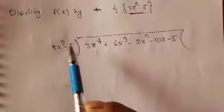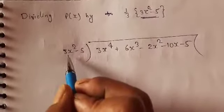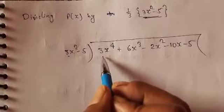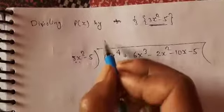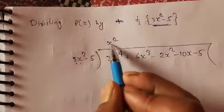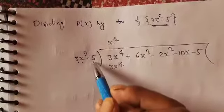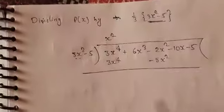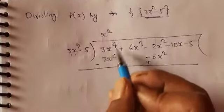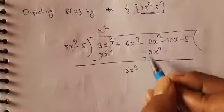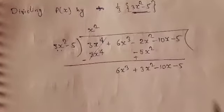Dividing, the terms are in descending order of powers. From the first term of the divisor we have to make the first term of the dividend. The coefficients of x⁴ are both 3, so we multiply the divisor by x². So x² × (3x² − 5) gives 3x⁴ − 5x². Writing like terms together and changing the sign for subtraction: 3x⁴ cancels, leaving 6x³ − 2x² + 5x² − 10x − 5, which gives 6x³ + 3x² − 10x − 5.